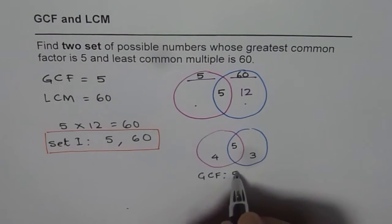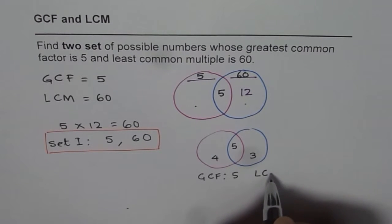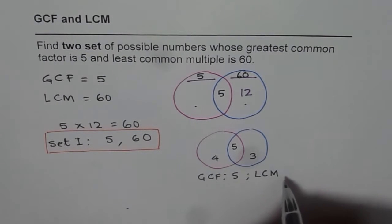And what is the least common multiple? Let's multiply all 3 of them which equals 4 times 5 times 3. 4 times 5 is 20, times 3 is 60.